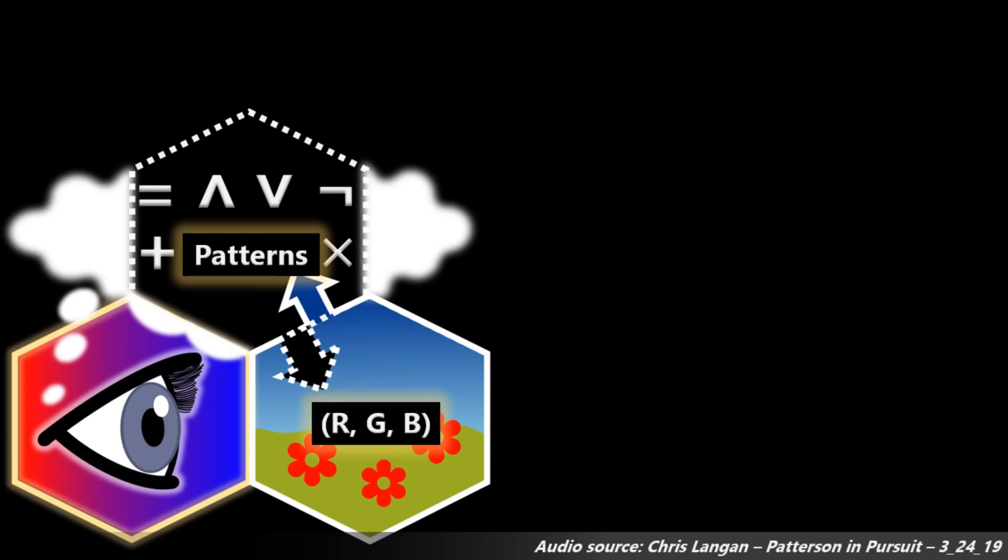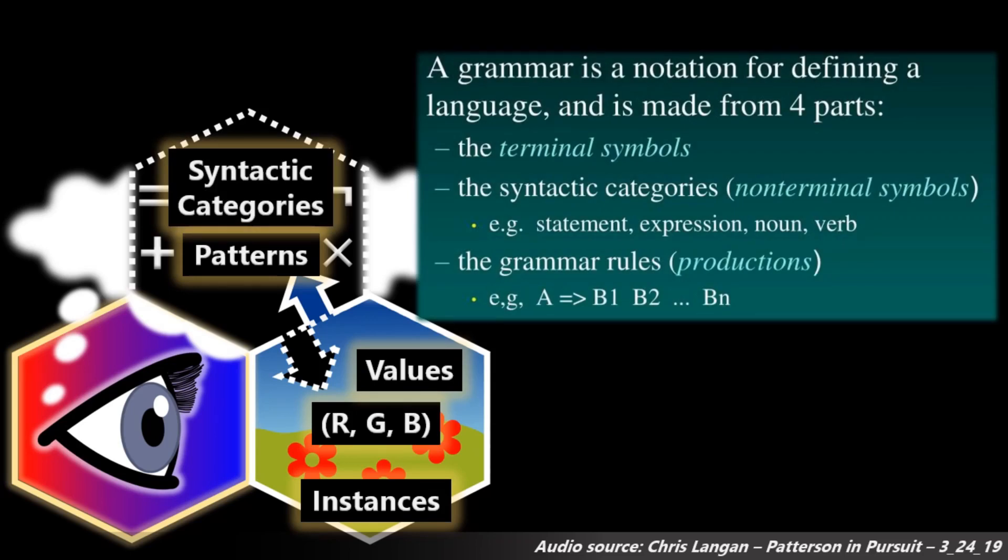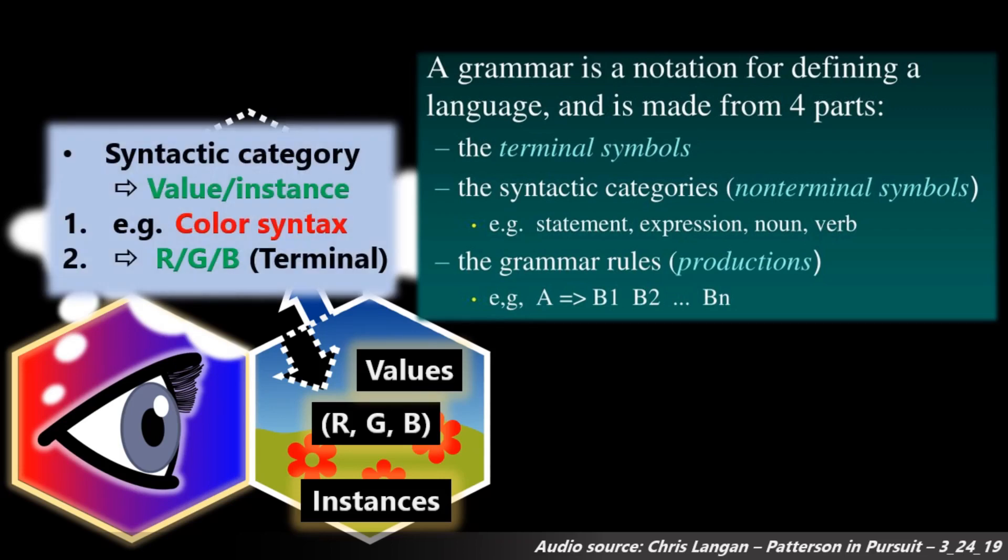And then you have instances, physical instances, external to yourself of those patterns. What they are, you have certain syntactic categories in your head in the sense of Kant, and what you're seeing are instances or values of those.